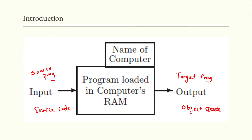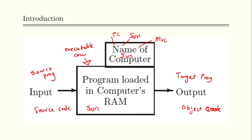On the top, the small rectangle indicates the name of the computer system — for example, PC, Sun Microsystem, or Mac. The big rectangle indicates the compiler, which is loaded into memory or RAM inside the computer. This compiler should be running on the machine indicated by the small rectangle. For example, if you use Sun, the compiler should run on Sun. We call this the executable compiler.